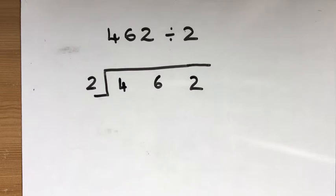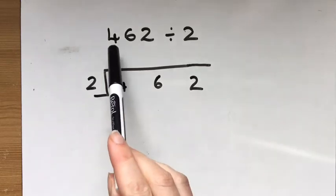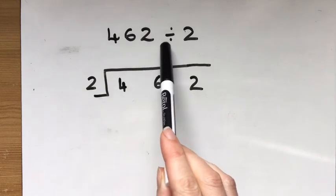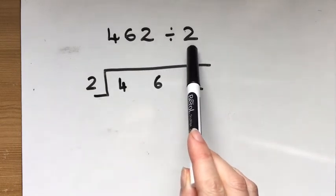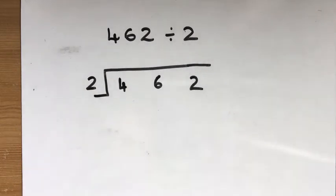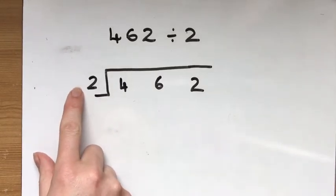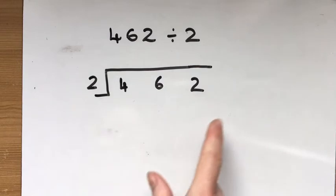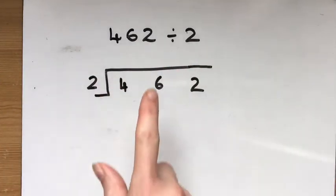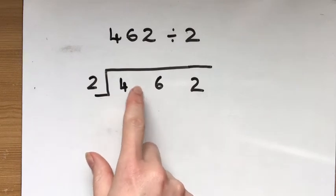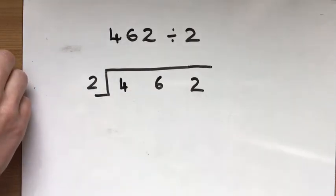They can even help us when we start to do written forms of division. So here we've got 462 divided by two. So we're sharing it into two equal groups. I've put my two on the outside to say that that's what I'm dividing by. And my large number that's being divided, that's being split up is in underneath here. This is sometimes called the bus stop method.